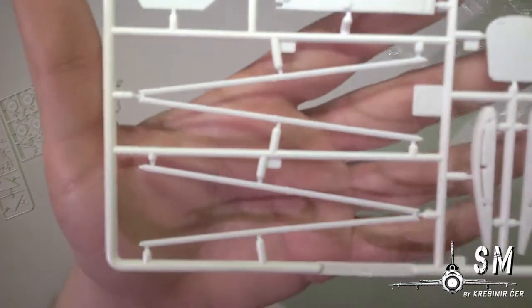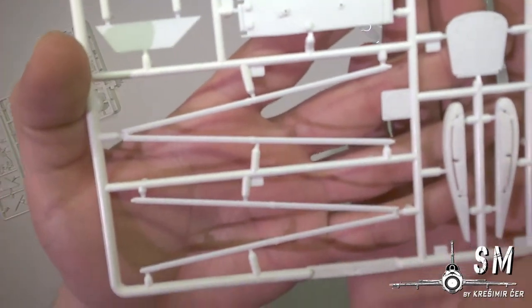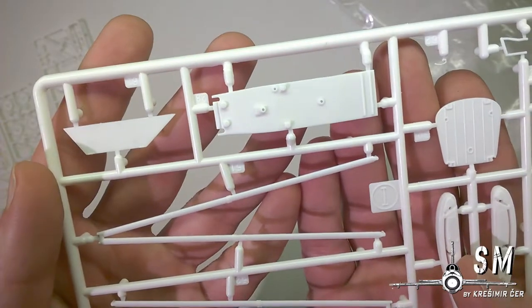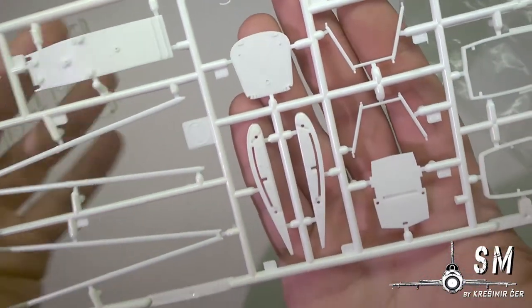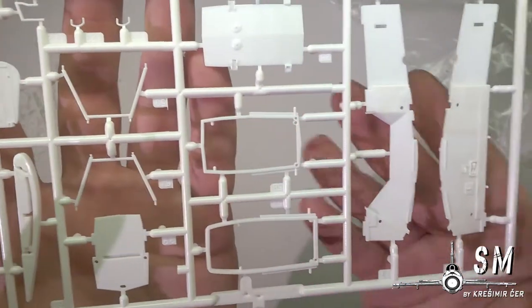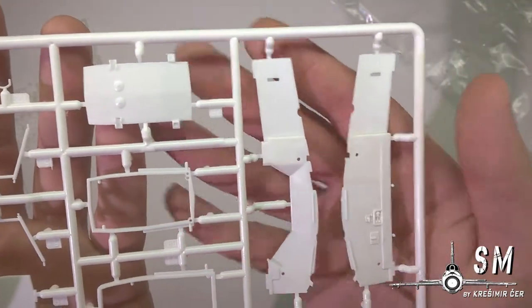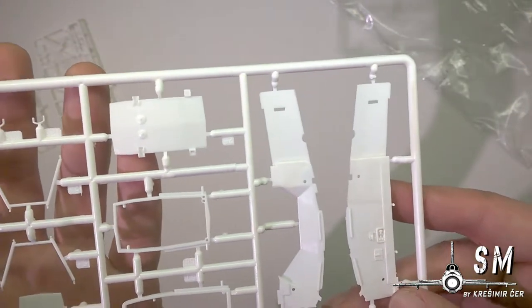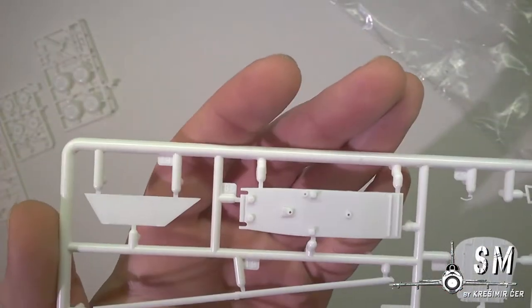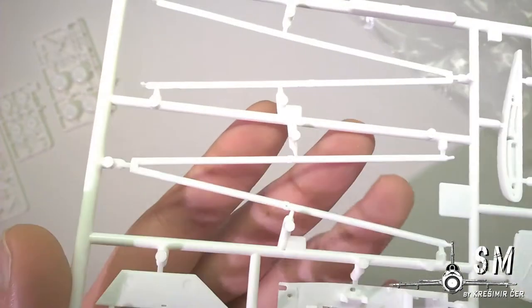Then we have our wing struts, all molded in white plastic. Our firewall, ribs for the wings, some small details for the cockpit, some structural details, ribs for the fuselage, and the fuselage sides all molded separately. And these ejector pins will not be seen, so that's fine. The floor.